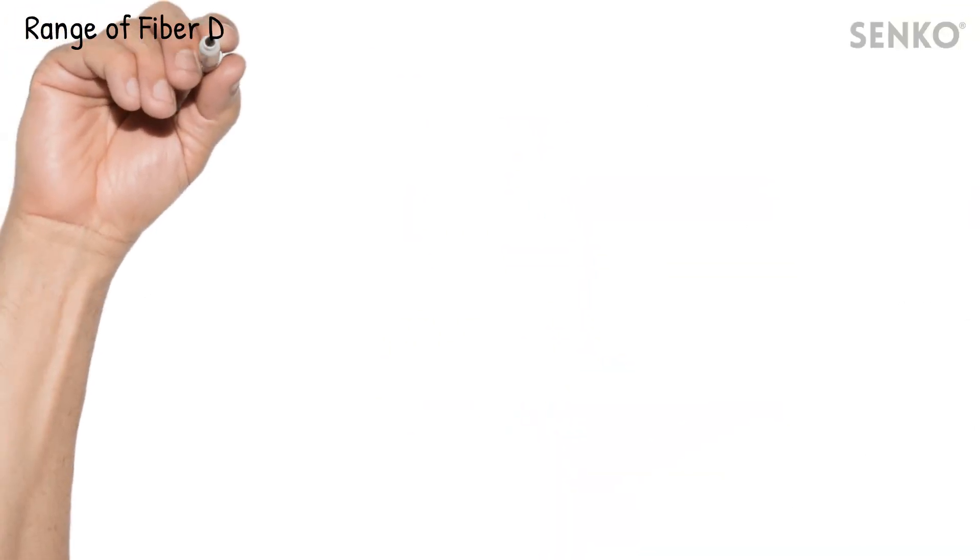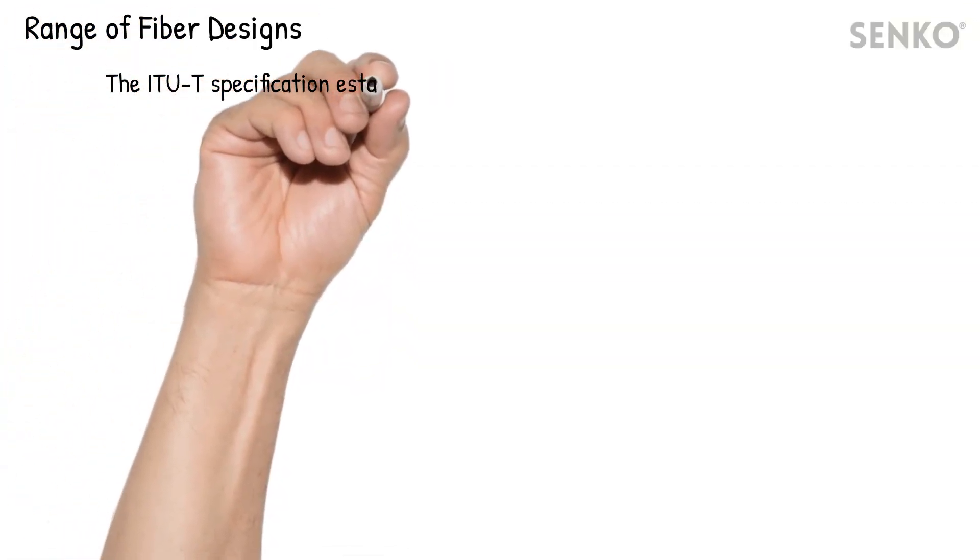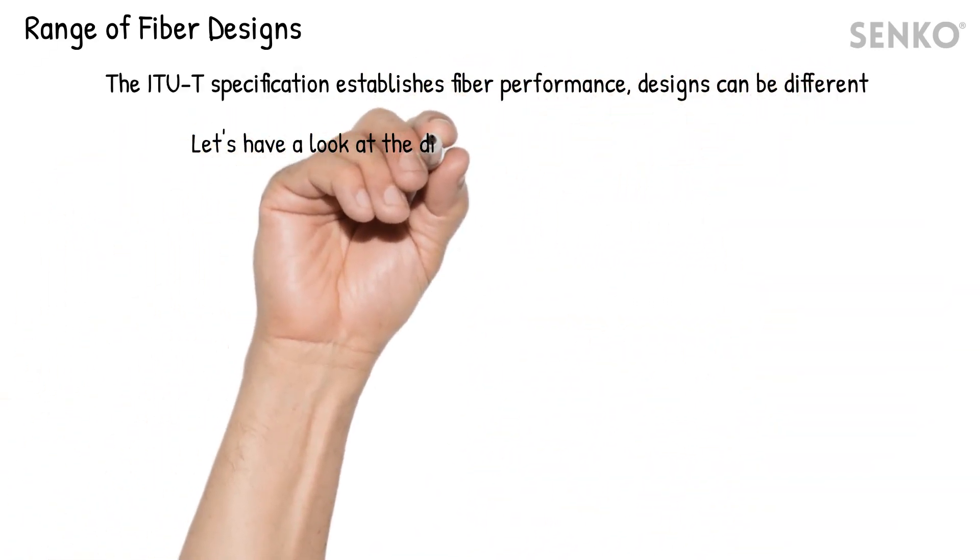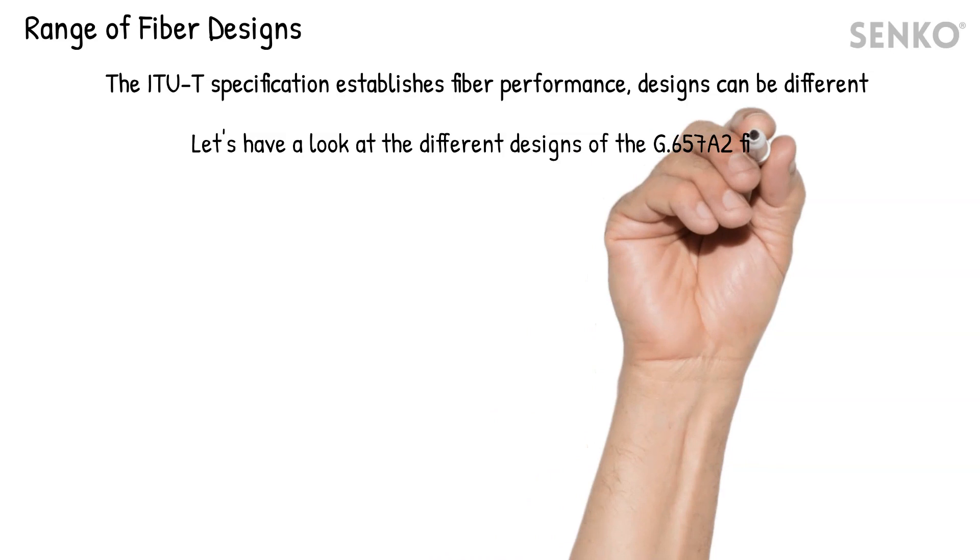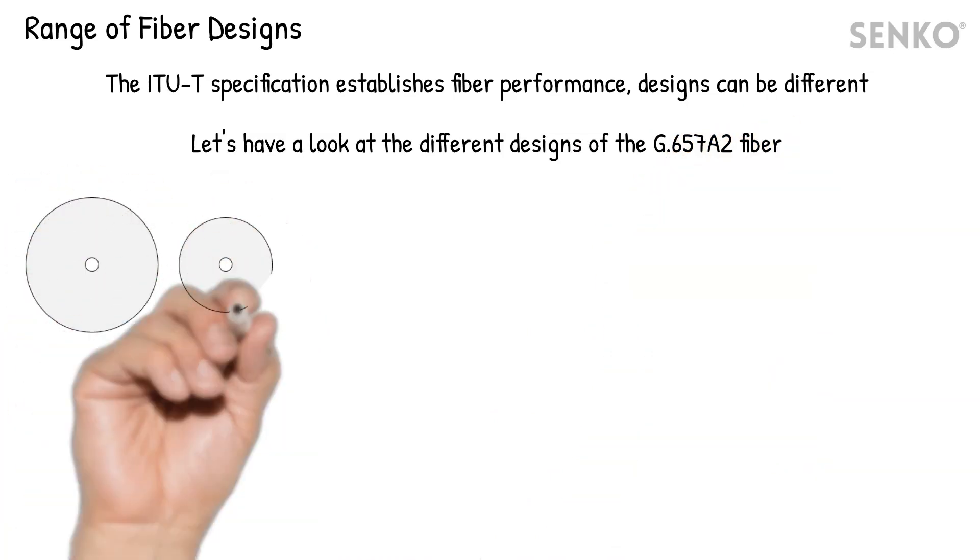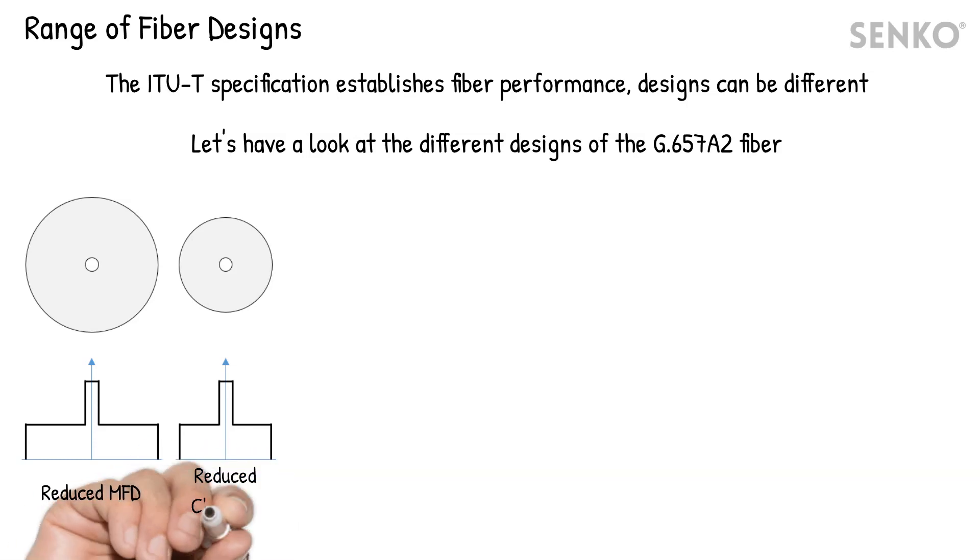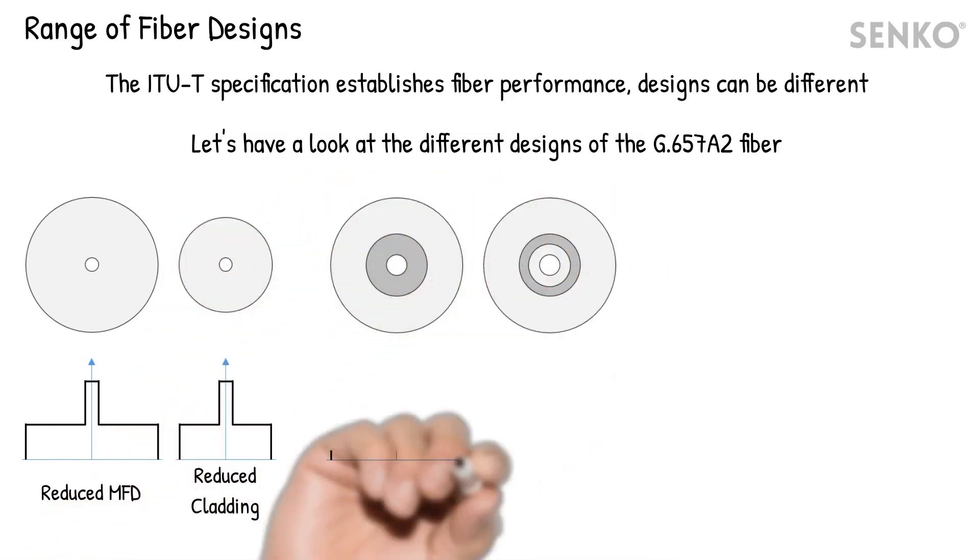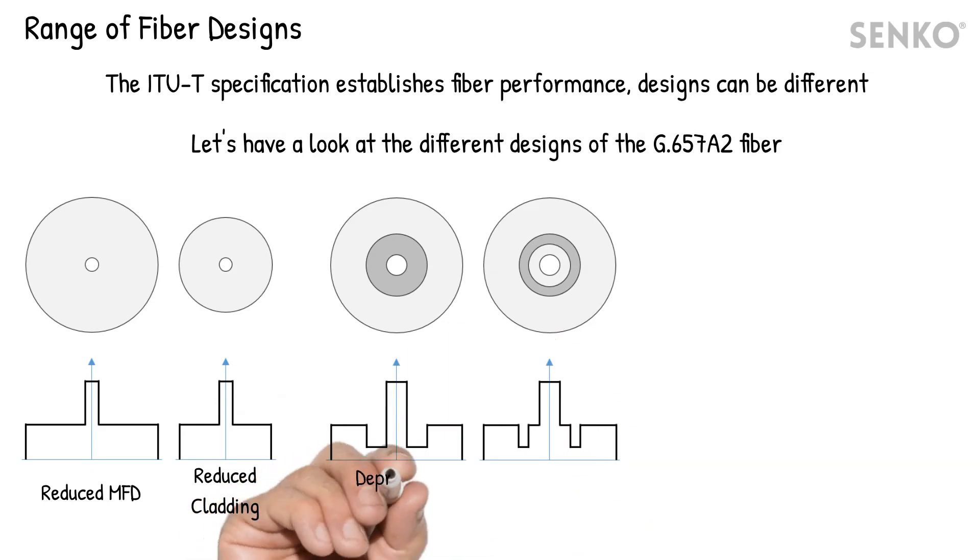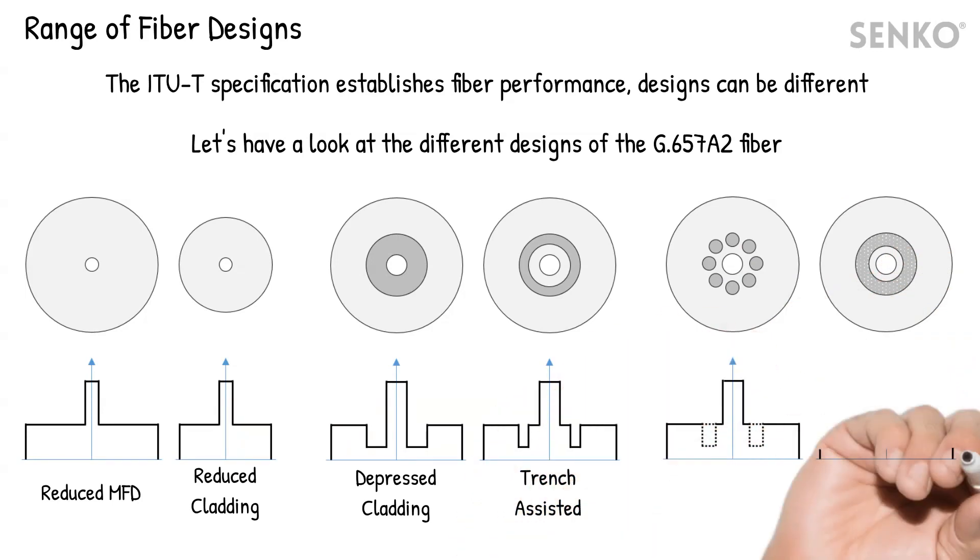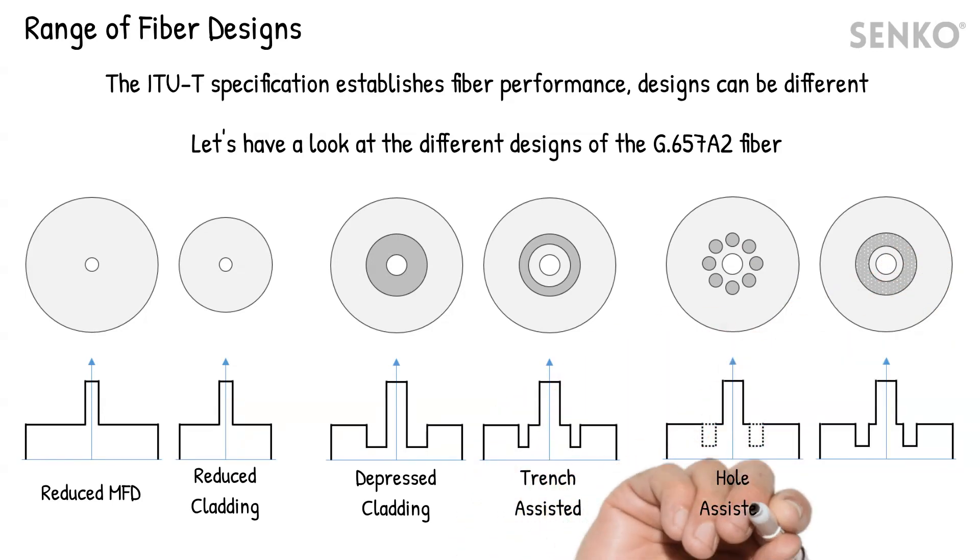The specifications in the ITU-T were established to ensure fiber performance standardization. However, it does not mean that every manufacturer's optical fiber is made the same way, as they can deploy different designs to achieve similar outcomes. An example is the bend-insensitive G.657A2 fiber. Manufacturers change the fiber or IOR profile to achieve the intended bending requirements.